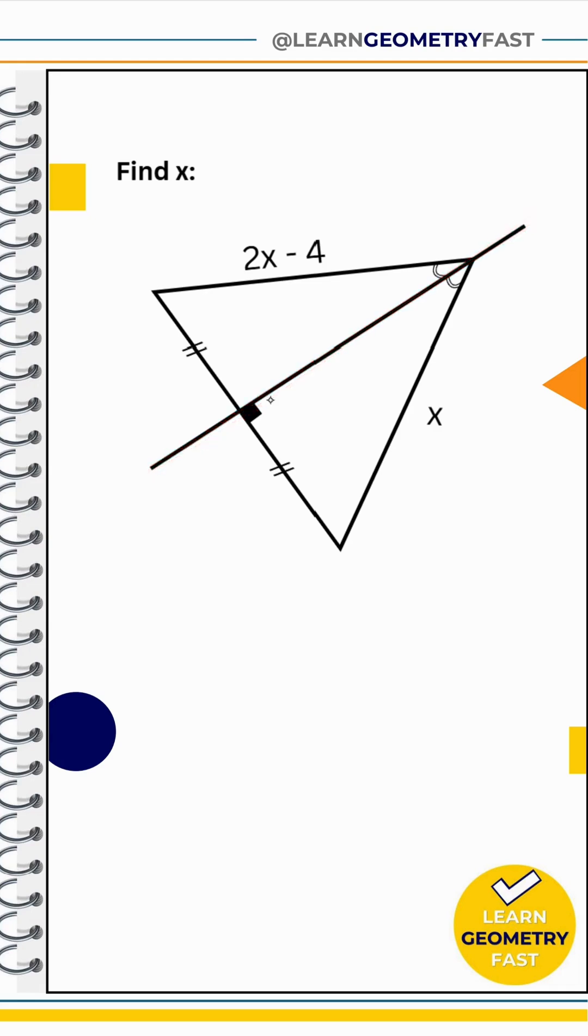We see that this line right here is a perpendicular bisector, bisecting this angle into equal parts. We're going to mark that real quick and call it alpha and alpha. We also see that these two sides are marked to be the same, so for now we're just going to call them Z and Z.